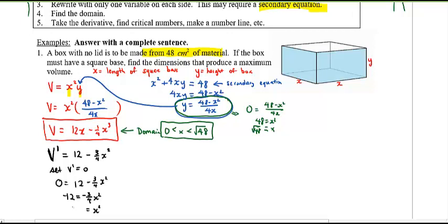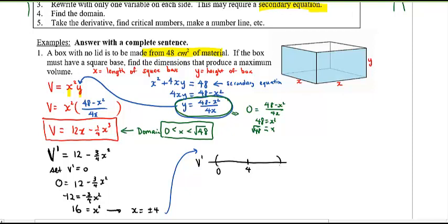Dividing both sides by negative three-quarters gives 16, so x squared equals 16, meaning x equals plus or minus 4. Negative 4 doesn't work given our domain. Using the first derivative number line with our domain from 0 to root 48, and critical number 4: plugging in 2 gives a positive derivative, plugging in 5 gives a negative derivative. Positive then negative at x equals 4 means that's a maximum.